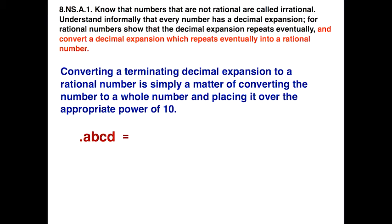In general form, to convert a terminating decimal to a rational number, we make it into a whole number as our numerator and put it over the appropriate power of 10, which in this case would be ten-thousandths, so our denominator would be ten-thousandths.